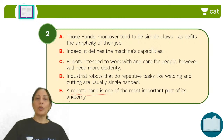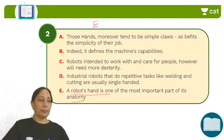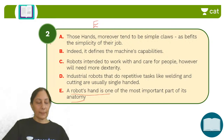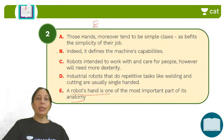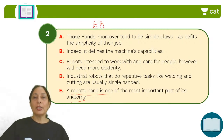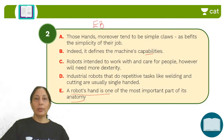E is the opening sentence: 'A robot's hand is one of the most important parts of its anatomy.' E is followed by B: 'Indeed, it defines the machine's capabilities.' So the hand itself defines the machine's capabilities — that is the E-B combination. After that you have D: 'Industrial robots that do repetitive tasks like welding and cutting are usually single-handed.' This is mentioning the tasks done by a robot.